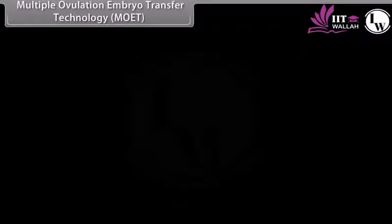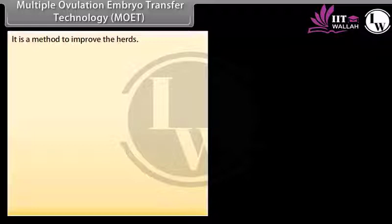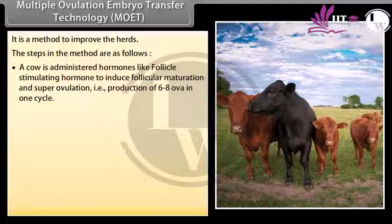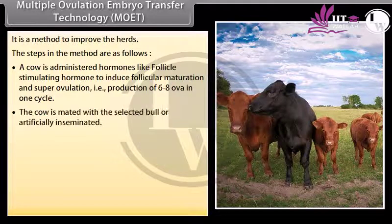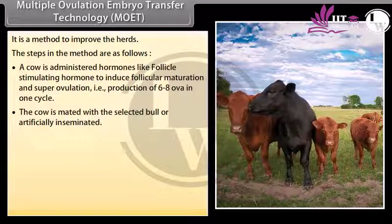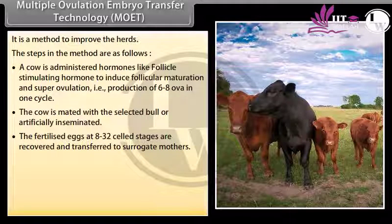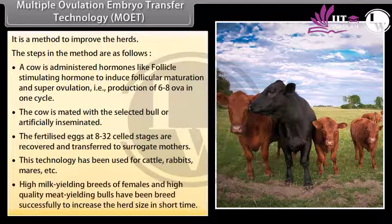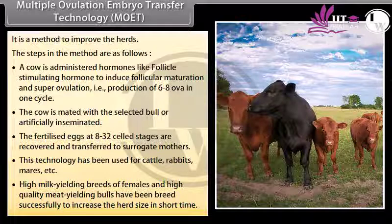Multiple Ovulation Embryo Transfer Technology (MOET) is a method to improve herds. Steps: A cow is administered hormones like follicle stimulating hormone to induce follicular maturation and super ovulation, producing 6 to 8 ova in one cycle. The cow is mated with a selected bull or artificially inseminated. The fertilized eggs at 8 to 32-celled stages are recovered and transferred to surrogate mothers. This technology has been used for cattle, rabbits, mares, etc. High milk-yielding females and high-quality meat-yielding bulls have been bred successfully to increase herd size in the short term.